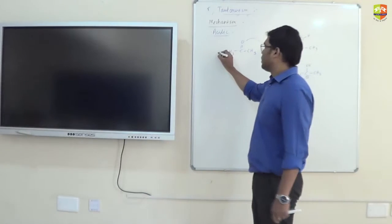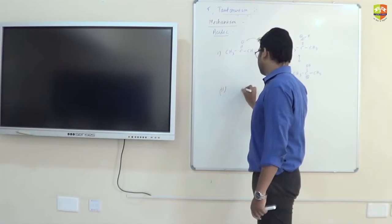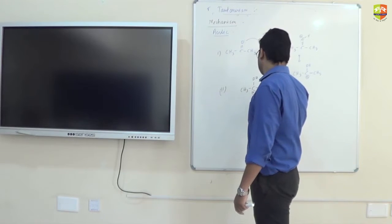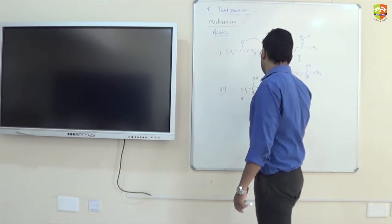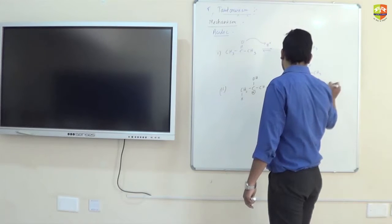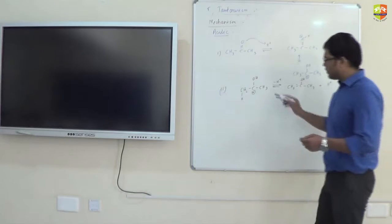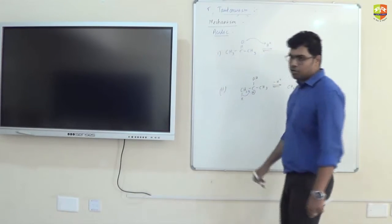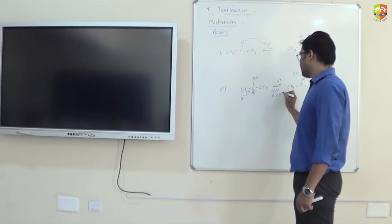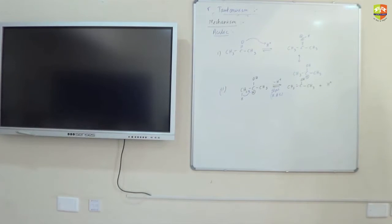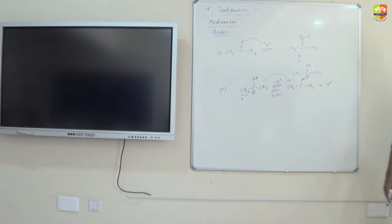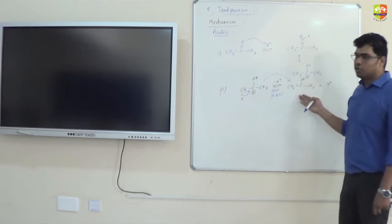This is the first step of the reaction. In the second step, this carbocation - CH, C-OH, positive charge, CH3 - one of these hydrogens comes out as H+, leaving this lone pair of electrons behind. This step is the slowest step and it is the rate-determining step. It means if the product is stable, this reaction has more tendency to go in the forward direction.